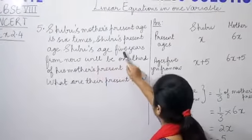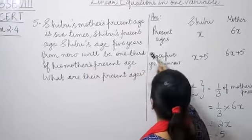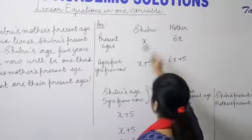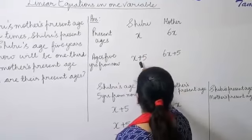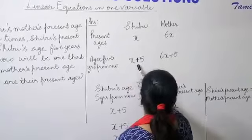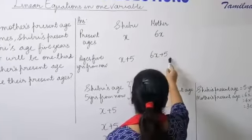Shibu's age 5 years from now. So, let's find their ages 5 years from now. Shibu's age 5 years from now will be X plus 5. And his mother's age after 5 years will be 6X plus 5.